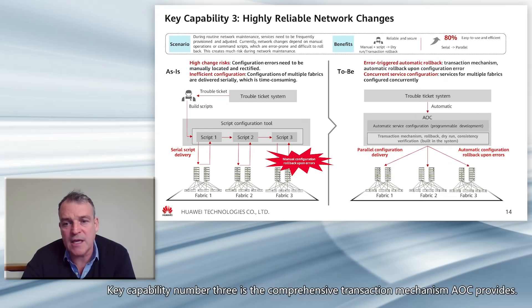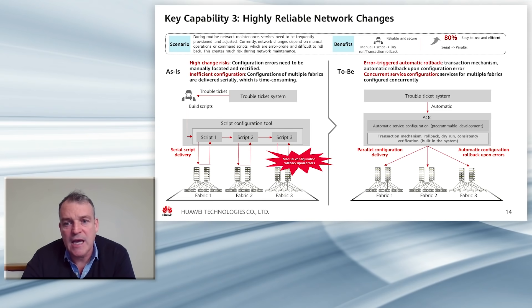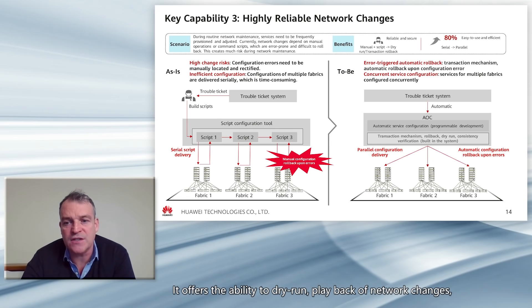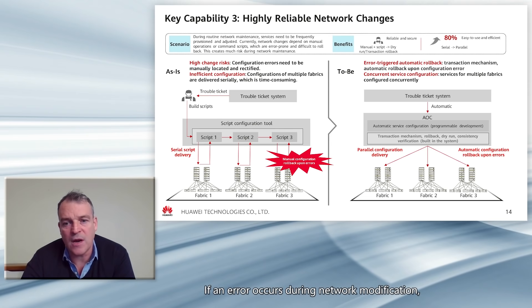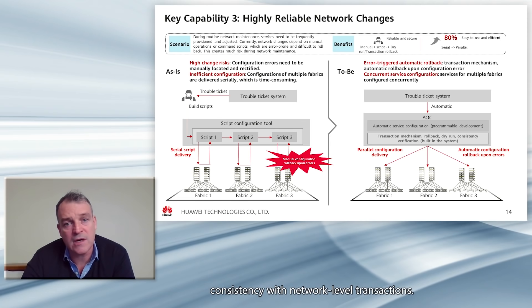Key capability number three is the comprehensive transaction mechanism AOC provides. It offers the ability to dry-run playback of network changes as well as the verification of current network configuration. If an error occurs during network modification, it allows automatic rollback, thereby ensuring consistency with network-level transactions.